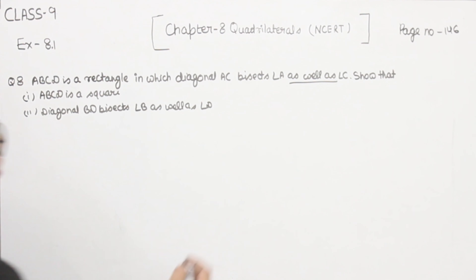Now comes part 2. In this one, we have to prove that diagonal BD bisects angle B as well as angle D. Now I am going to give names to the angles: this is angle number 5, angle 6, angle 7, and this is angle 8.